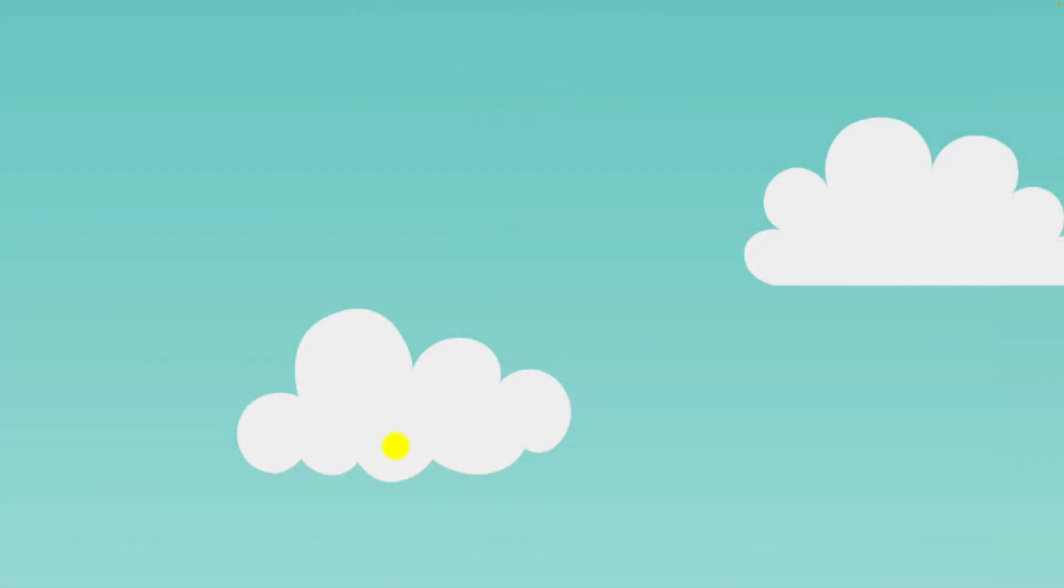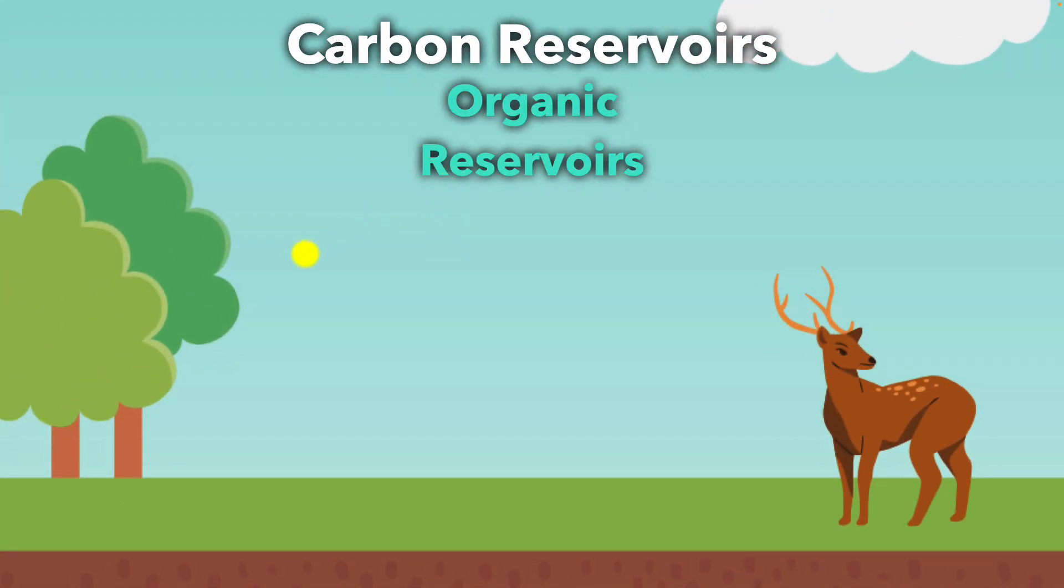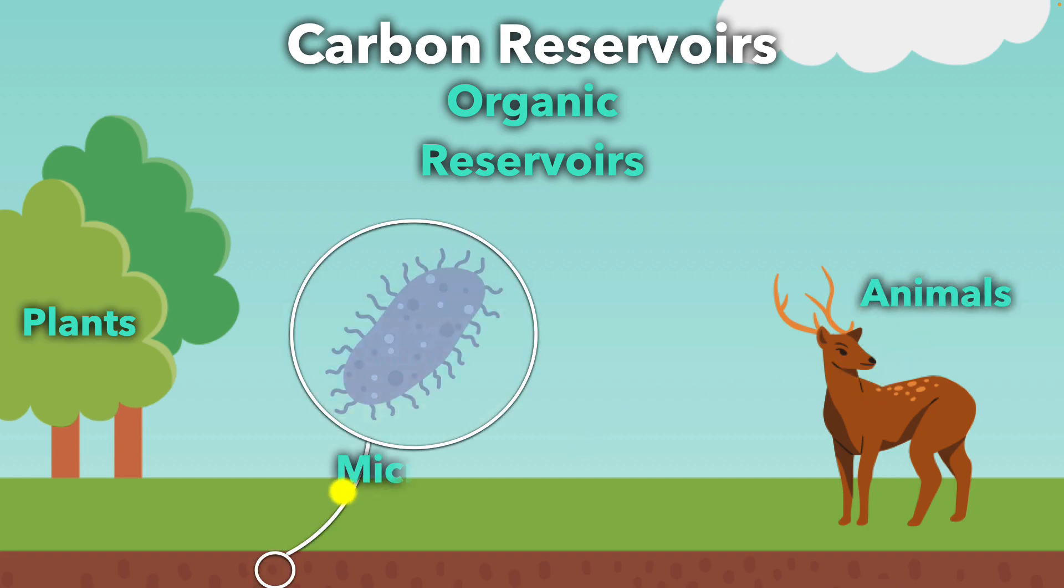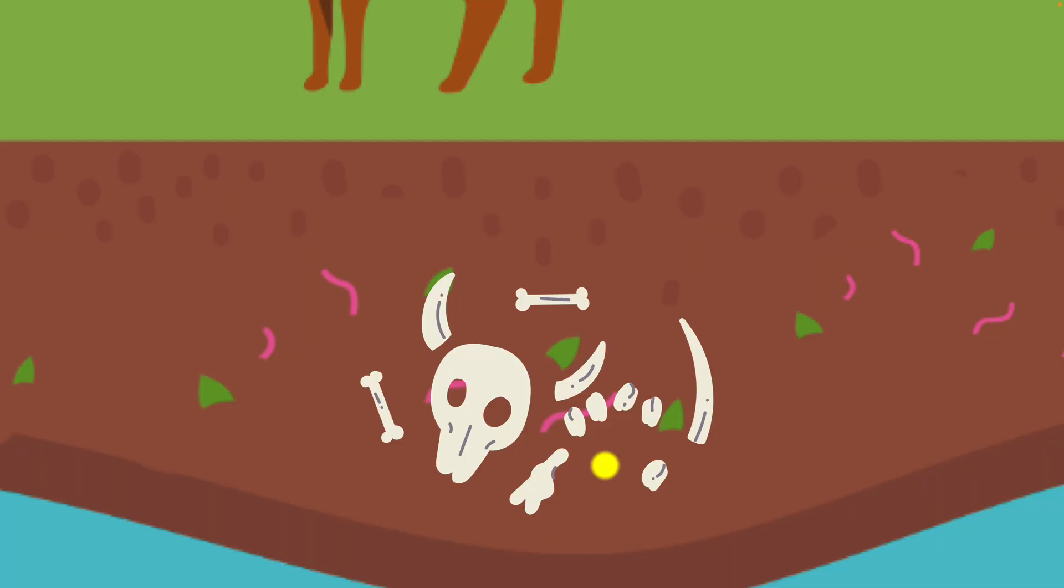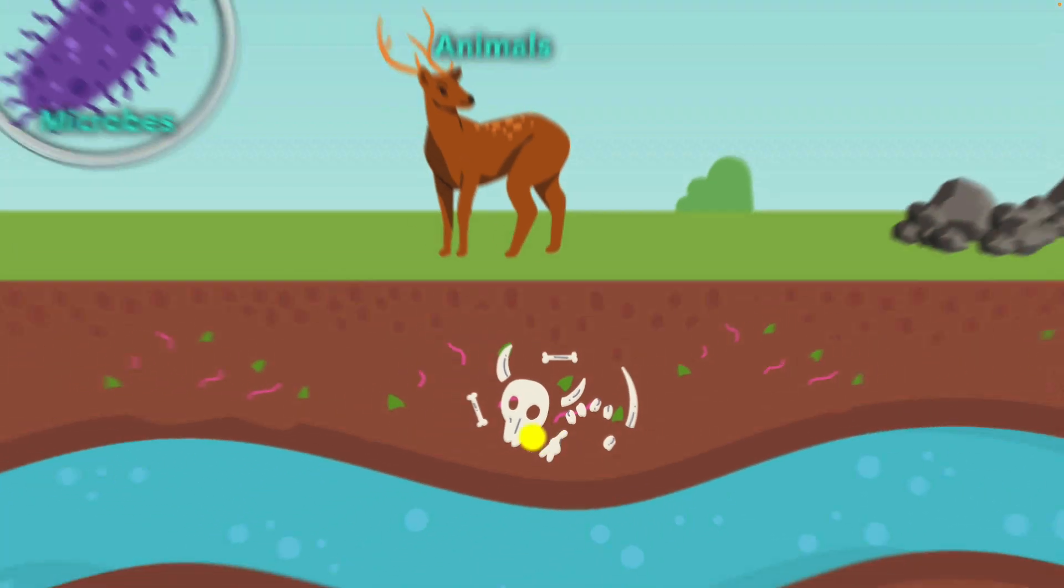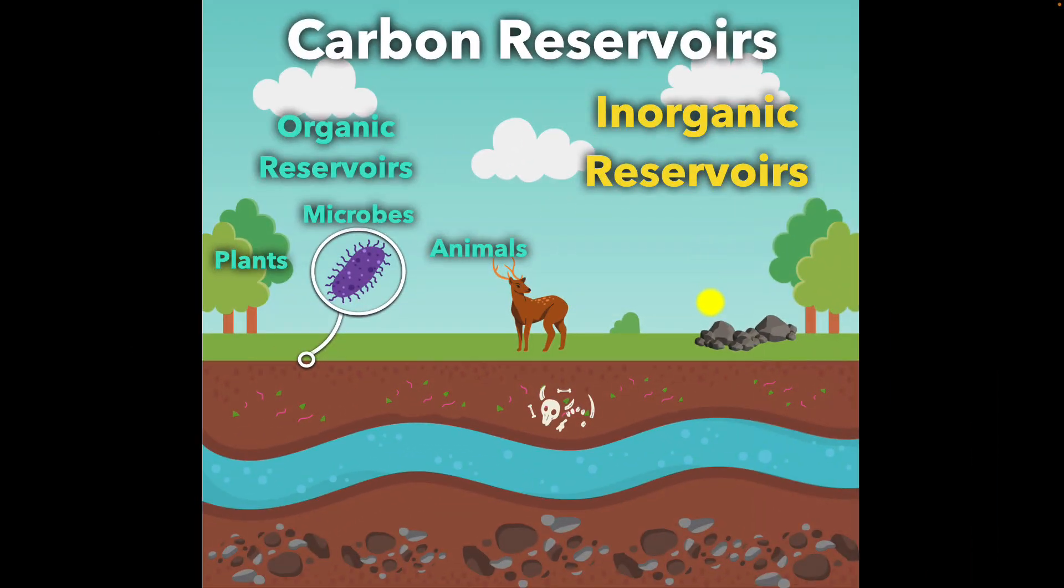Carbon is stored in different parts of the environment called carbon reservoirs. Organic reservoirs include living organisms like plants, animals, and even microbes. This also includes their remains after they die. Now, inorganic reservoirs include non-living parts of the environment like rocks, sediments, water, and even the atmosphere.